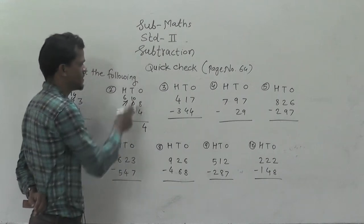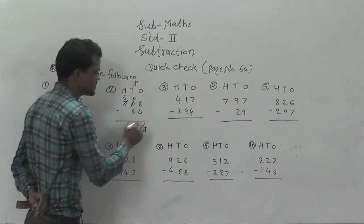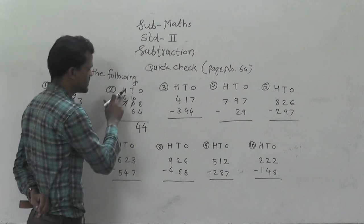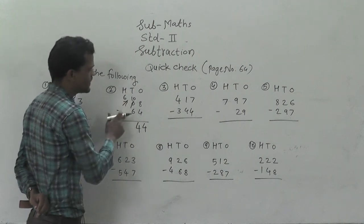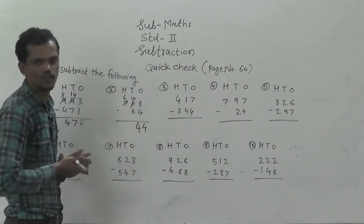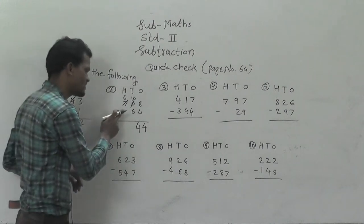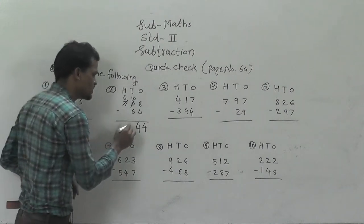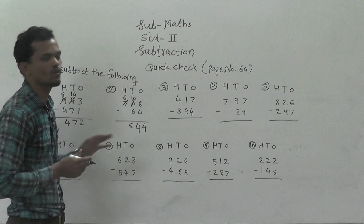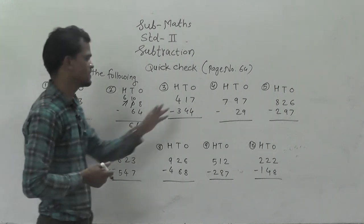Now subtract the tens column: 10 minus 6 is 4. Then in the hundreds column, there is no digit in the subtrahend, so consider 0 is there. 6 minus 0 is 6. So 644 is the answer.